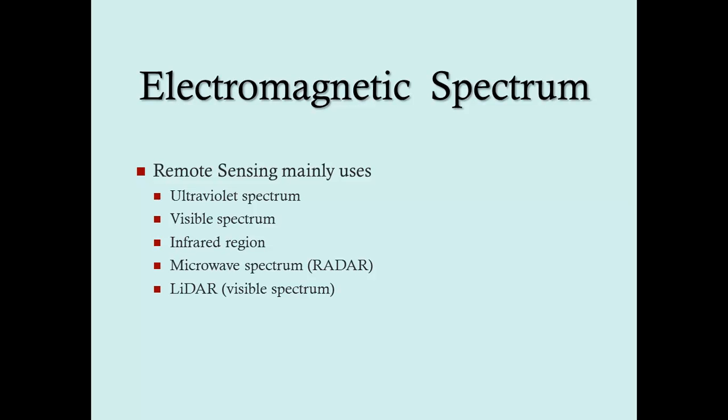In addition to the ultraviolet, visible and infrared region, remote sensing also uses microwaves and lidar, and that is generally considered to be active remote sensing, where the energy is created and sent out by the sensor.